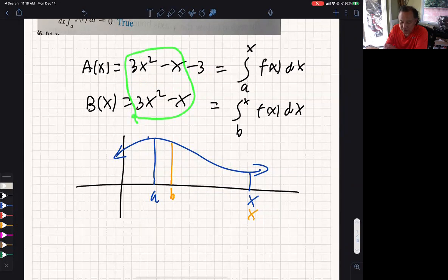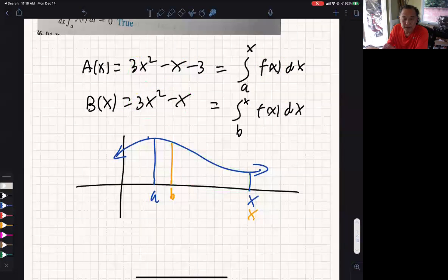Because how do you check this? You take the derivative of this and it should be that. You take the derivative of this and it should be that. And it is. The derivative of that and the derivative of that are both the same. So they came from the same formula.